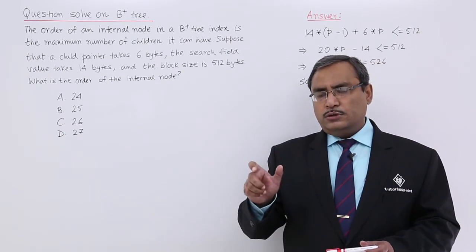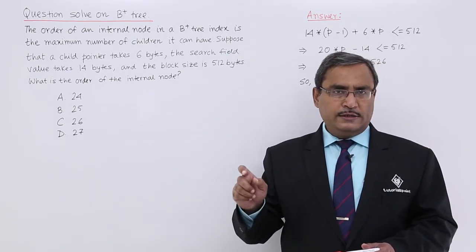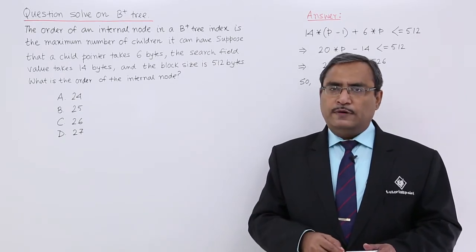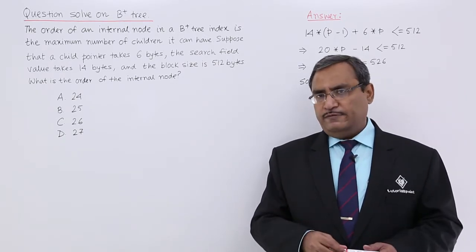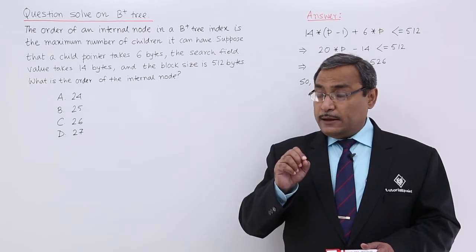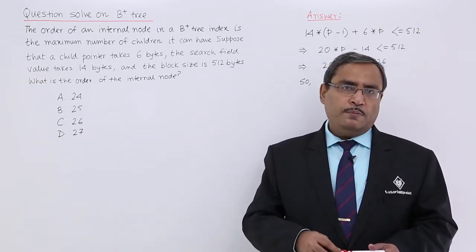These internal nodes will have say p number of pointer fields and p minus 1 number of search info or search item fields. That p will decide the order of the B plus tree.